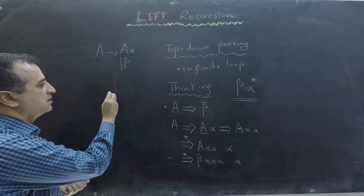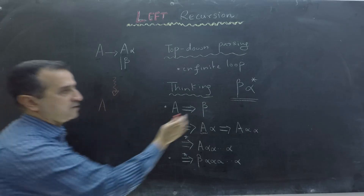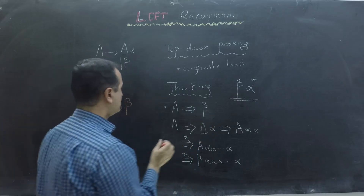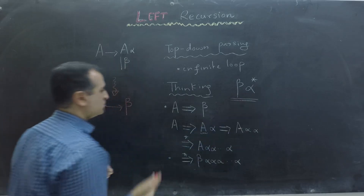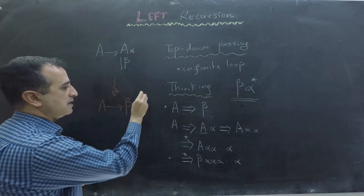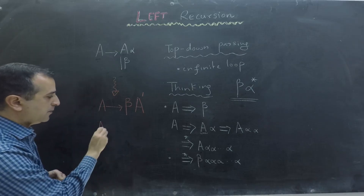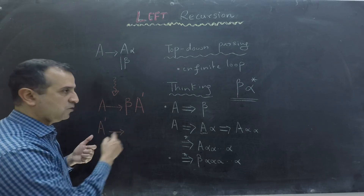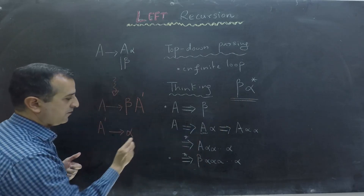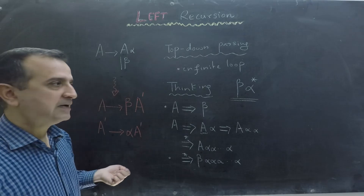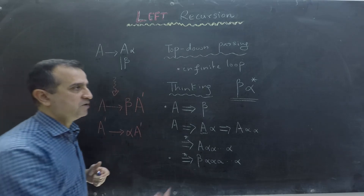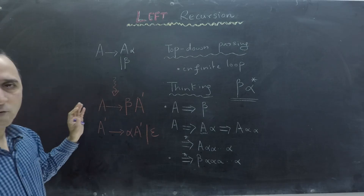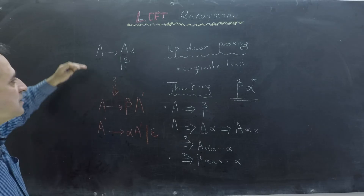So this transforms to: A goes to beta. Now we have to write a production that can produce multiple alphas. To that end we introduce a new non-terminal A-bar, and A-bar goes to alpha A-bar. One case is missing: A-bar could be the empty string, because we have zero or more alphas. So we write A-bar goes to epsilon. This is the formula to remove left recursion.